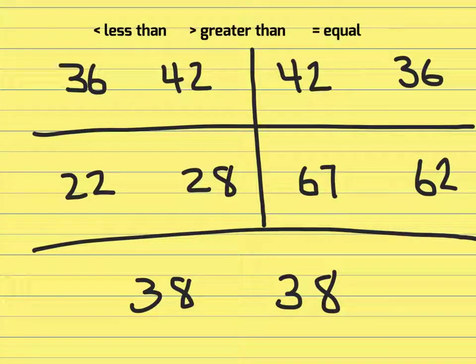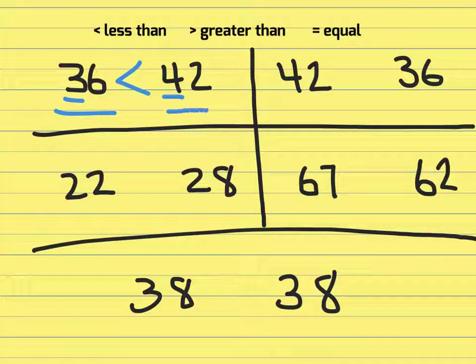In this slide we're talking about greater than and less than. When students work on these problems they always look at the number that's in the greatest place value. So here we have three tens and four tens. When they look at that they realize that three tens is less than four tens. So they will say 36 is less than 42.